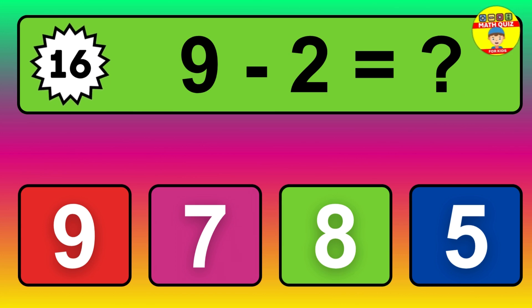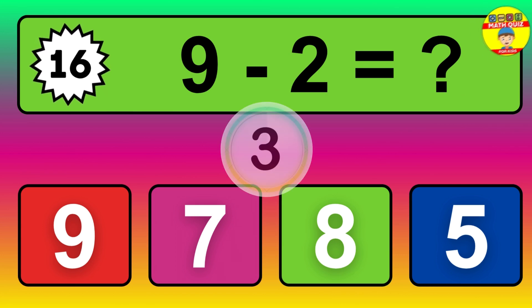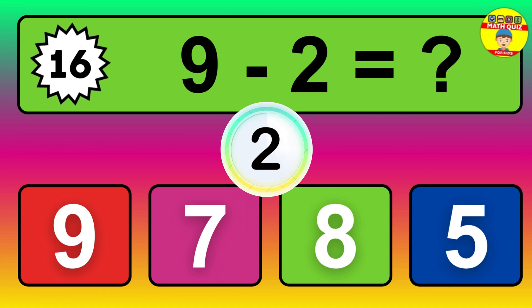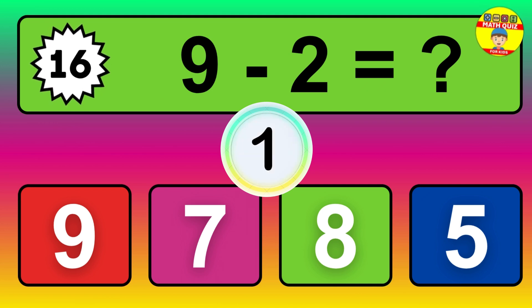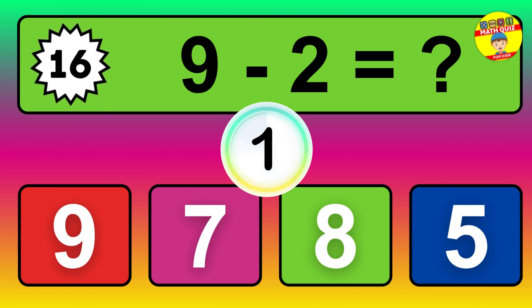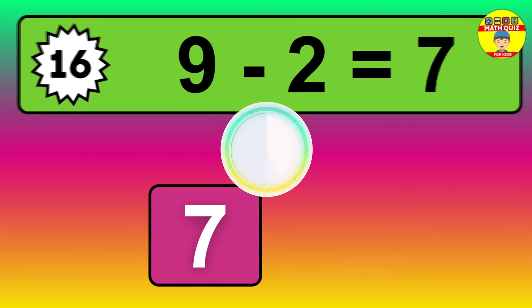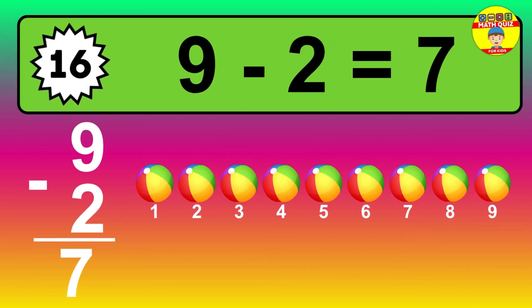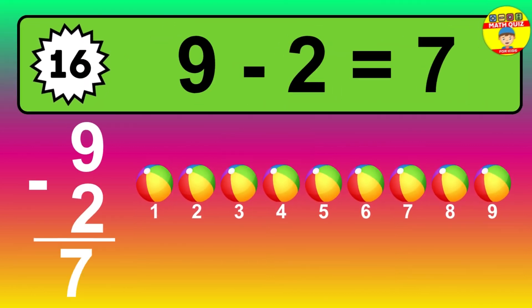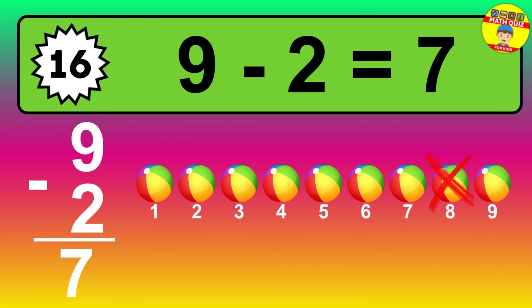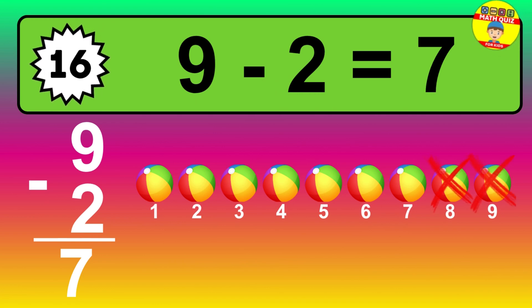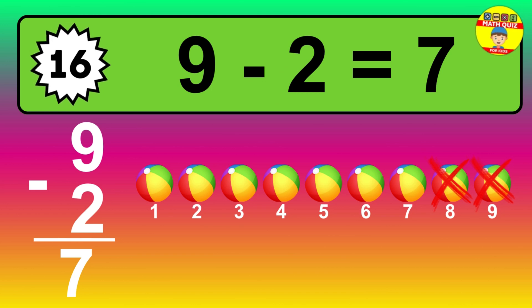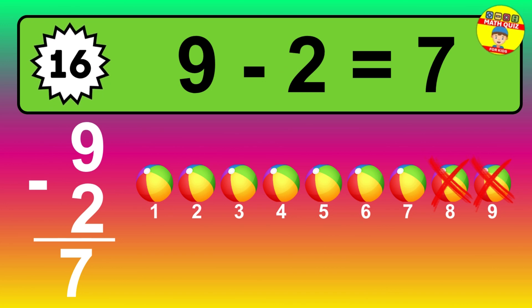Question sixteen: nine minus two equals what? So the answer is nine minus two is seven. Let's count it. One, two, three, four, five, six, seven.